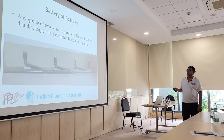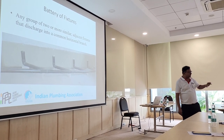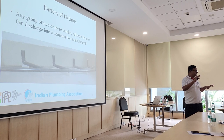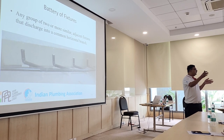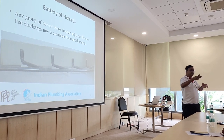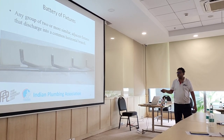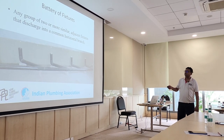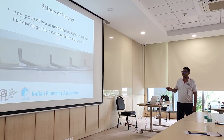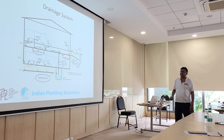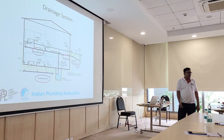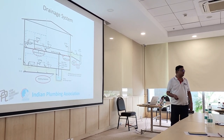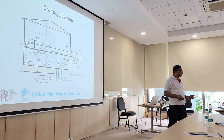Battery of fixture — what is the meaning of battery of fixture? Battery means an arrangement in an array. So there are multiple fixtures connected to one common drain, which is called as the battery of fixtures. This is part of the drainage system.